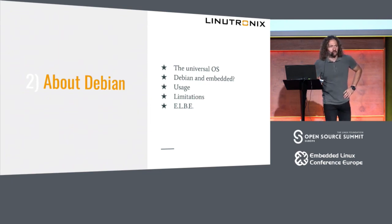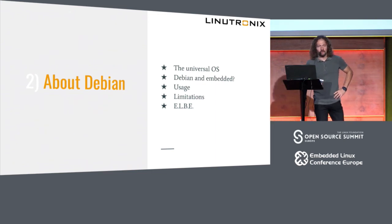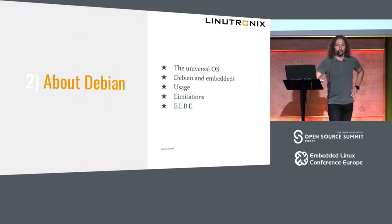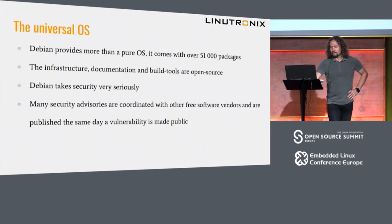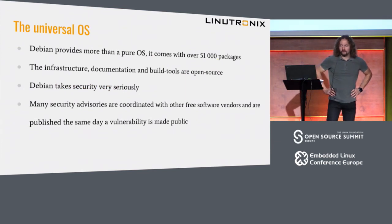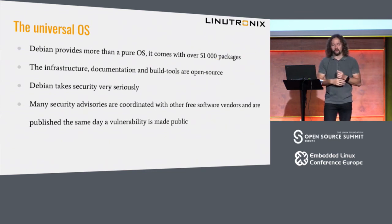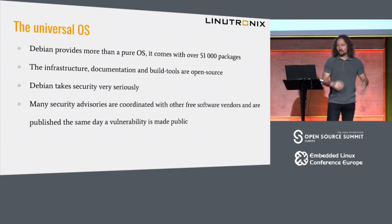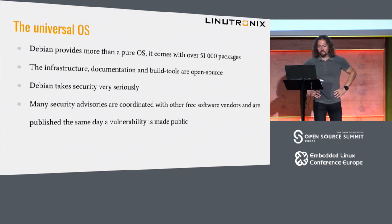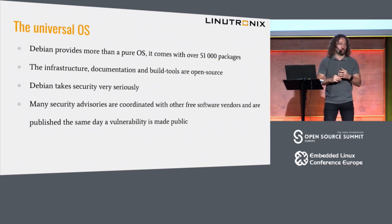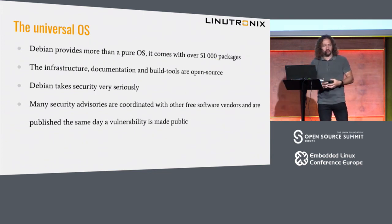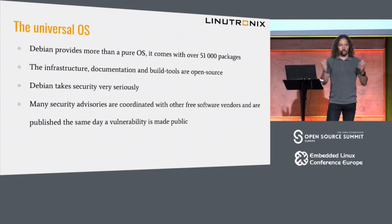Some of those limitations we at Linodronics tried to solve with a tool called ELBE. The Universal OS is, in the end, more than a pure operating system because it comes with over 51,000 open source packages pre-packed in a binary format for different architectures. Also, the whole infrastructure of this operating system, the documentation, and the build tools are available as open source. So if you want, you can set up an environment in your own company or lab to rebuild everything from scratch.